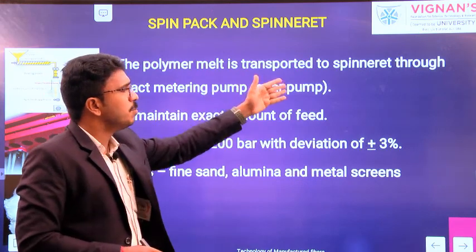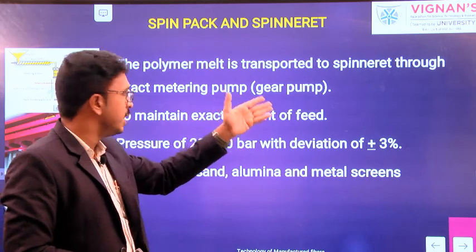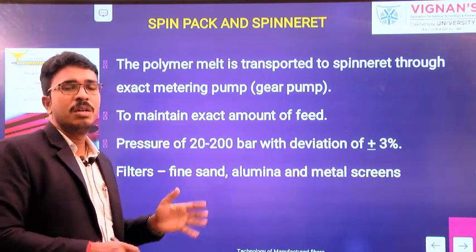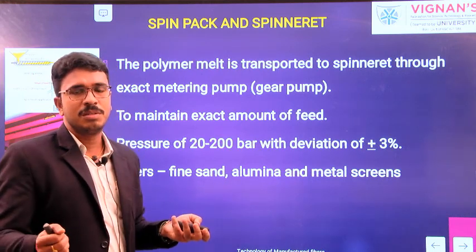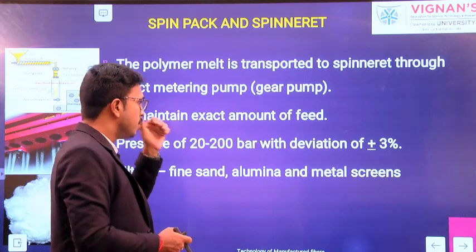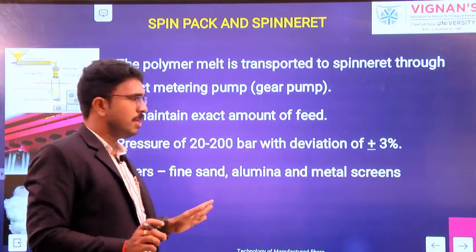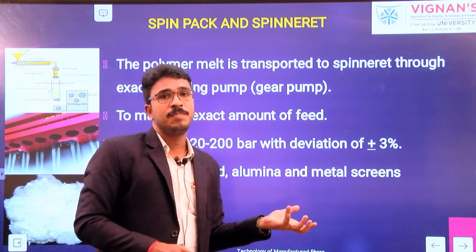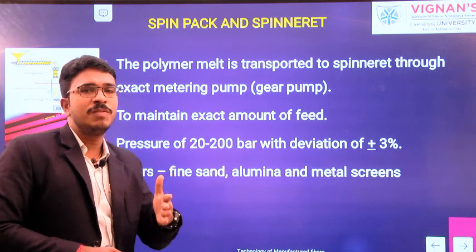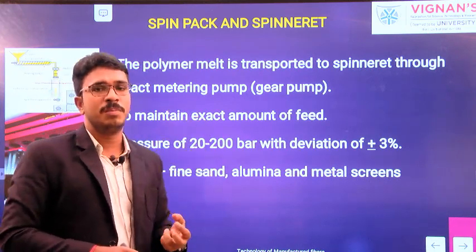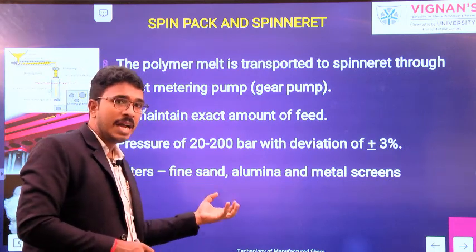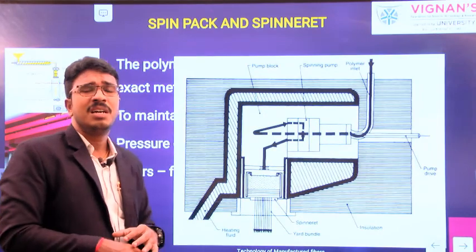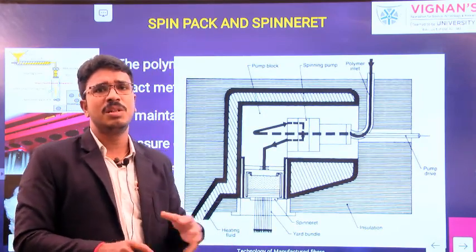The polymer melt is transported to the spinneret through an exact metering pump — that is the gear pump — which is used to maintain the exact amount of feed. The pressure is also very important. We are maintaining a pressure of 20 to 200 bar with a deviation of plus or minus 3 percent. For the filter, we are using alumina and metal screens as filter medium. After metering the exact quantity of molten polymer, it will pass through these filters — which have fine sand, alumina, and metal screens — which filter out any unwanted particles or unmolten polymers.